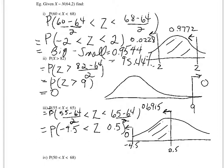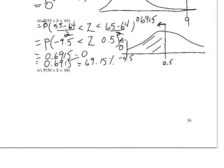So taking the bigger area, which is all that, minus the smaller one, leaves us the in-between. And the answer is just 69.15 minus 0, or 69.15%. And the final problem.